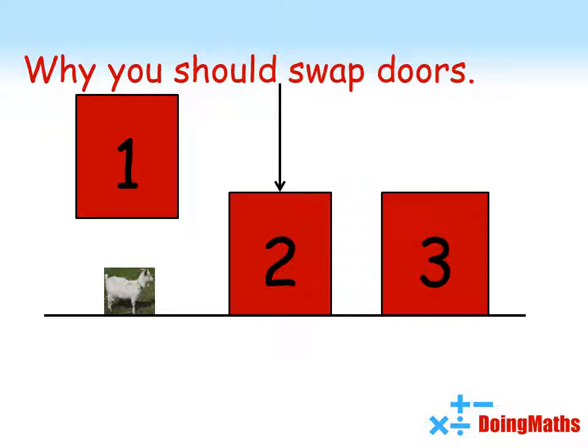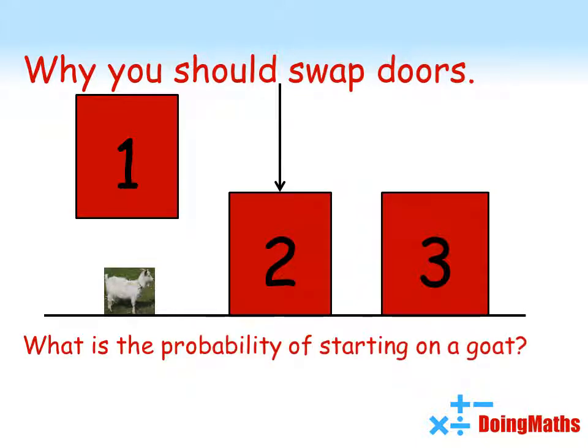Now, what was the probability of starting on a goat? Well, there were two goats and three doors, so the probability of starting on a goat was two-thirds. Hence, the probability of switching doors giving you a car is two-thirds. Difficult to believe, but true.